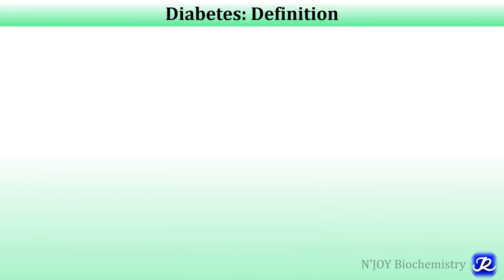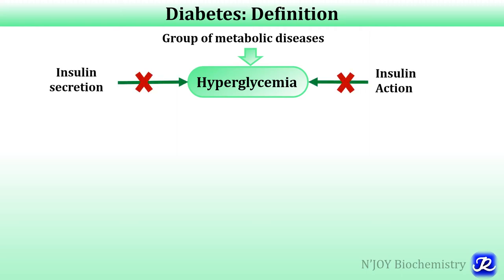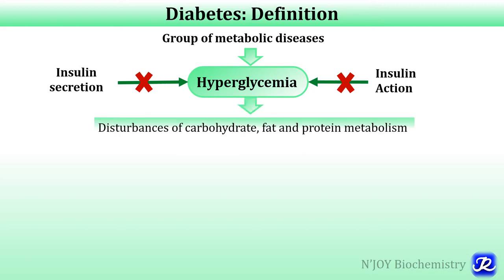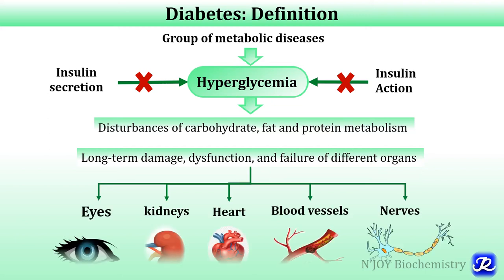Diabetes mellitus, commonly known as diabetes, is a group of metabolic diseases characterized by hyperglycemia — that is increased blood glucose — resulting from defects in insulin secretion, insulin action, or both, and disturbances of carbohydrate, fat, and protein metabolism. The chronic hyperglycemia of diabetes is associated with long-term damage, dysfunction, and failure of different organs, especially eyes, kidneys, heart, blood vessels, and nerves.